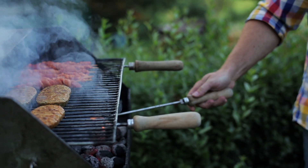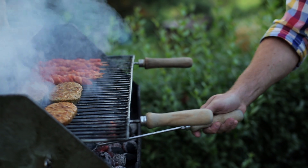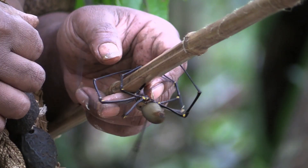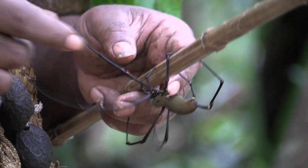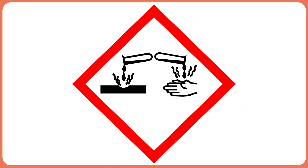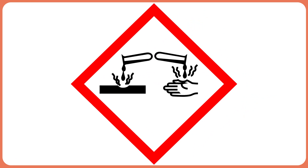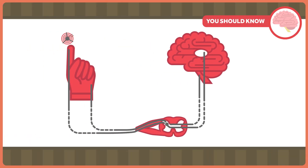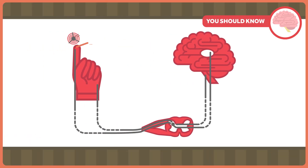There are temperature receptors that tell you when you're feeling something hot or cold. Mechanical receptors let you know when you're touching something or something is touching you. There are even receptors that detect changes in pH. When stimuli are interpreted as being noxious — meaning they could cause damage to our tissues — specialized receptors called nociceptors send signals to our brain.